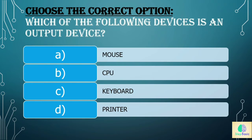Question five: which of the following devices is an output device? Options are a) mouse, b) CPU, c) keyboard, or d) printer. The answer is d) printer.